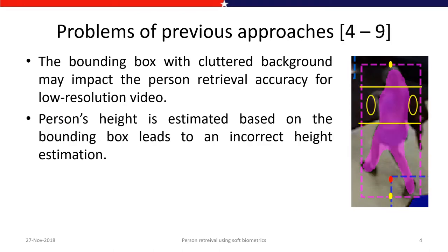Previous approaches have problems with respect to bounding boxes. A bounding box with cluttered background may impact person retrieval accuracy — for example, the torso region is detected but yellow circles also cover background pixels, so if video quality is very poor, such pixels impact identification accuracy based on torso color. Also, person height is generally estimated based on the bounding box top and bottom, but the person may not be fully covered, so height estimation will also be incorrect if only the bounding box boundary is considered.